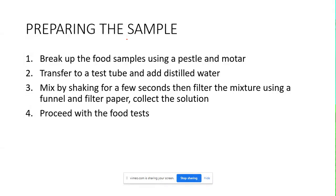For most of the tests, you first have to prepare the sample, which means breaking up the food samples using laboratory equipment. You'll need a pestle and mortar, test tubes, distilled water, droppers, filter paper, a funnel, beakers, a water bath setup including a Bunsen burner, tripod stand, wire mesh, and a thermometer. Of course, you'll also need the samples and the reagents you'll be using.